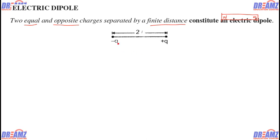If we consider this diagram, at one end there is a minus q charge and at the other end there is a plus q charge. The value of the charge at both ends is equal — both are q — but one is positive and another is negative, and that is why it is a dipole. The length separating these two charges is 2l.